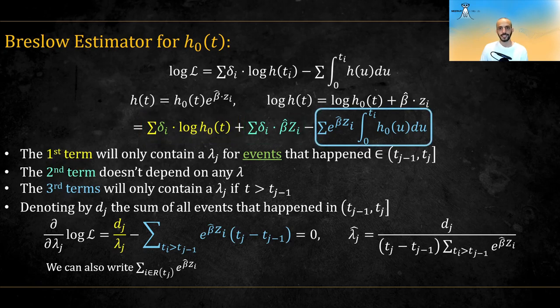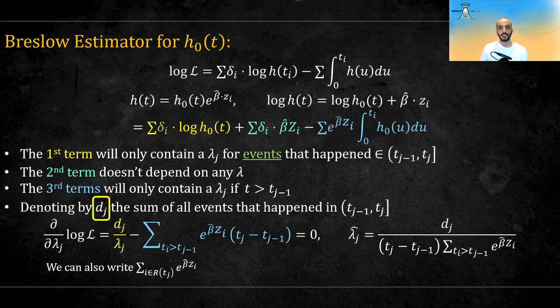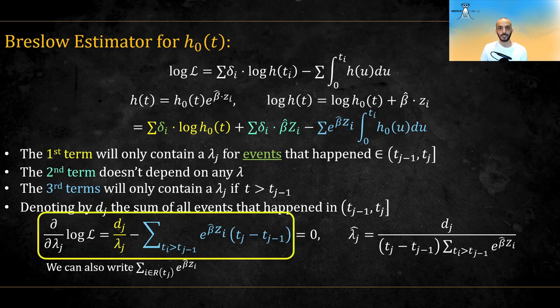And the third term will only contain a lambda for events that happened after the start of that lambda time frame, that is, after t of j minus 1. Denoting by dj the number of events that happened in the j-th time frame, then the derivative with regards to a specific lambda j will be equal to this.